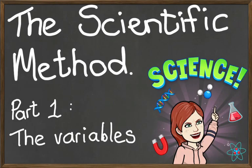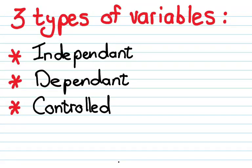Hi there and welcome to the Chaotic Classroom. This is the first of a series of videos on the scientific method. In this video we are going to be looking at variables. The first thing you need to know about variables is that there are three different types: independent, dependent, and controlled.